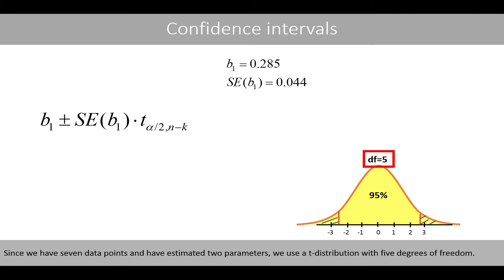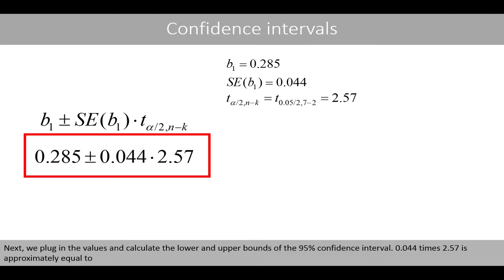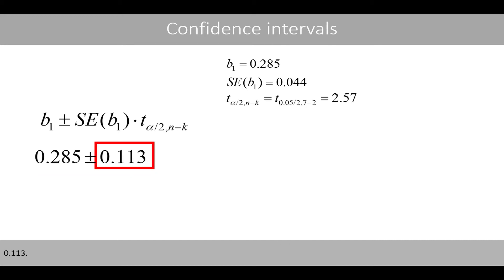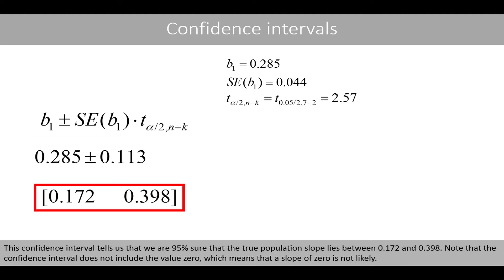Since we have 7 data points and have estimated 2 parameters, we use a t-distribution with 5 degrees of freedom. By using software, the positive t-score that defines 95% of the area is 2.57. Next, we plug in the values and calculate the lower and upper bounds of the 95% confidence interval. 0.044 times 2.57 is approximately equal to 0.113. 0.285 plus or minus 0.113 gives us the bounds of the 95% confidence interval. This confidence interval tells us that we are 95% sure that the true population slope lies between 0.172 and 0.398. Note that the confidence interval does not include the value 0, which means that a slope of 0 is not likely.